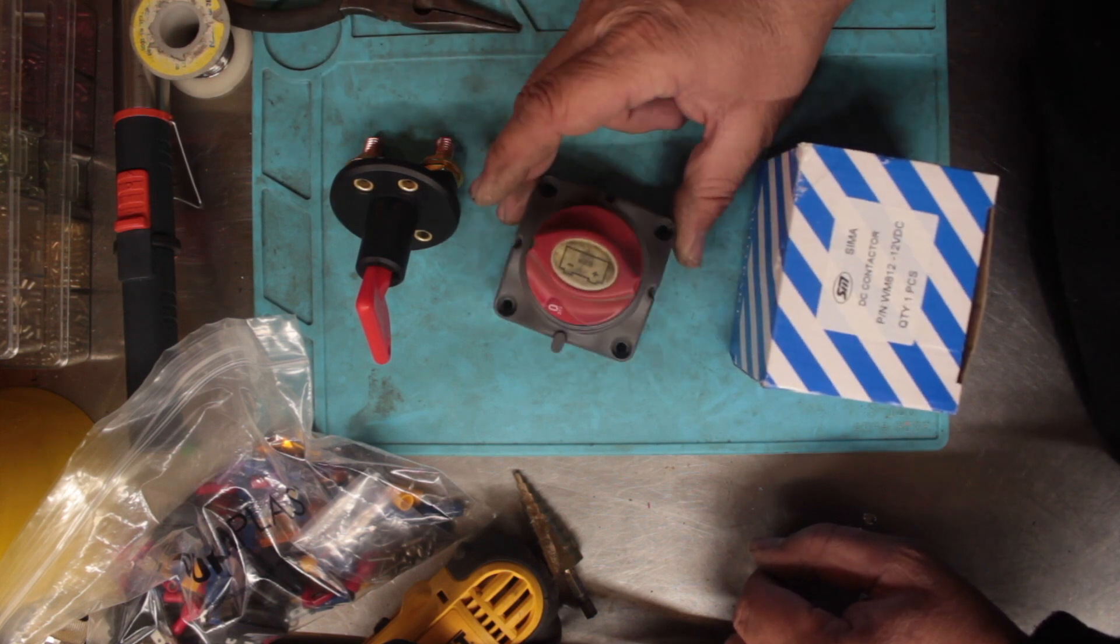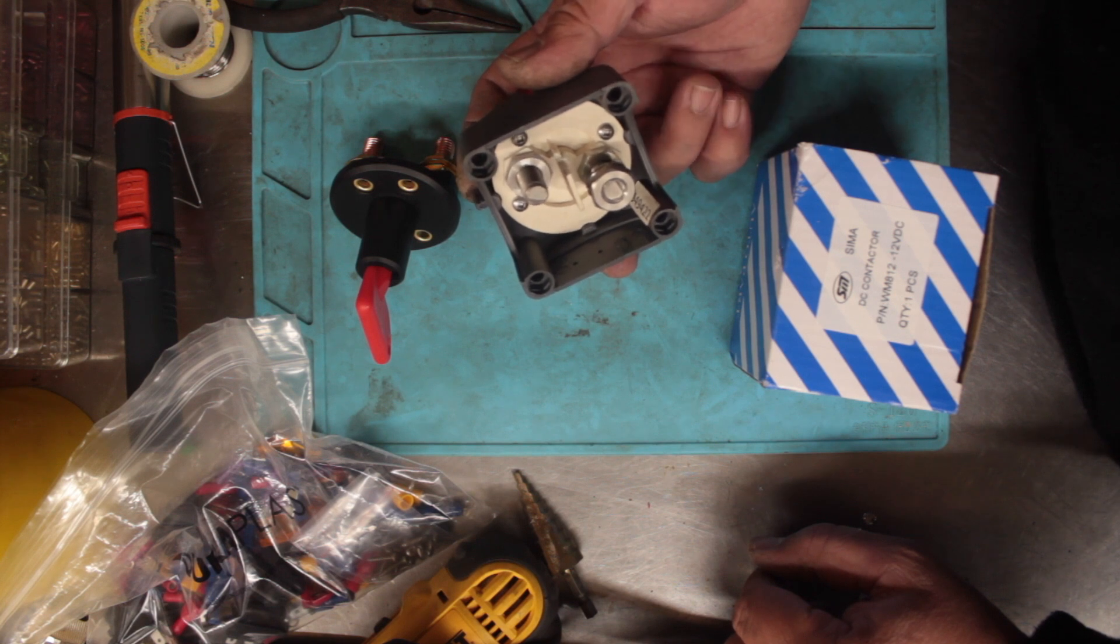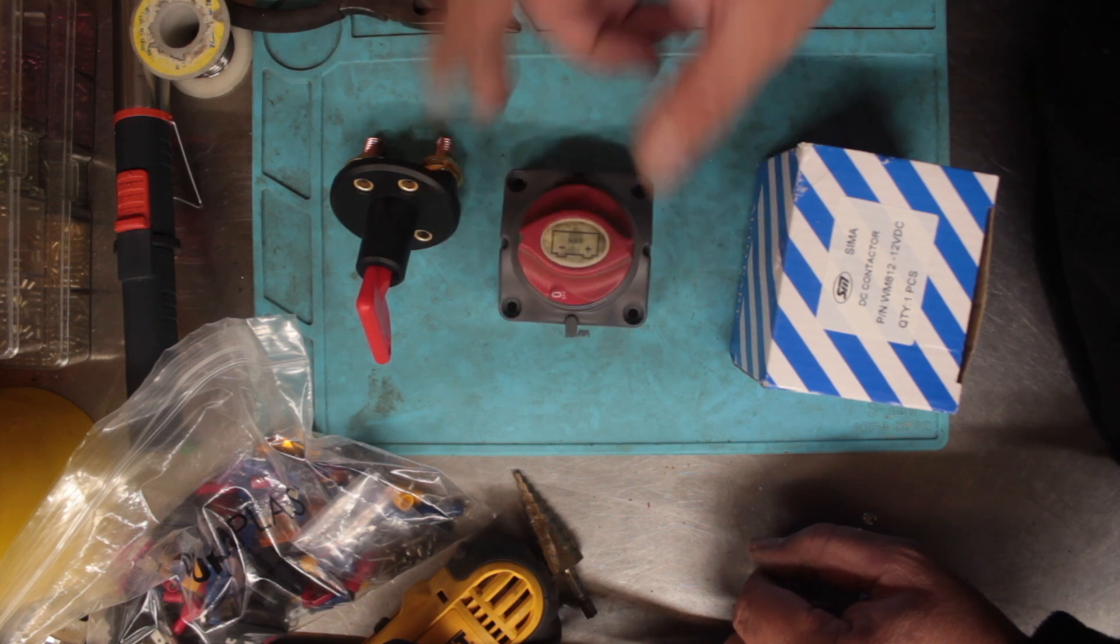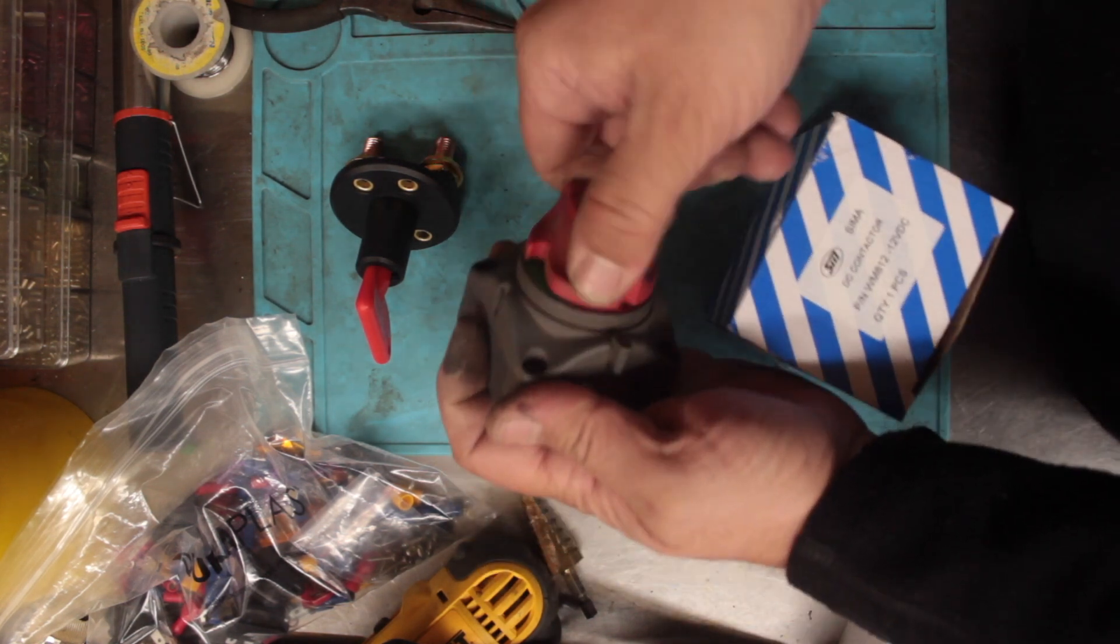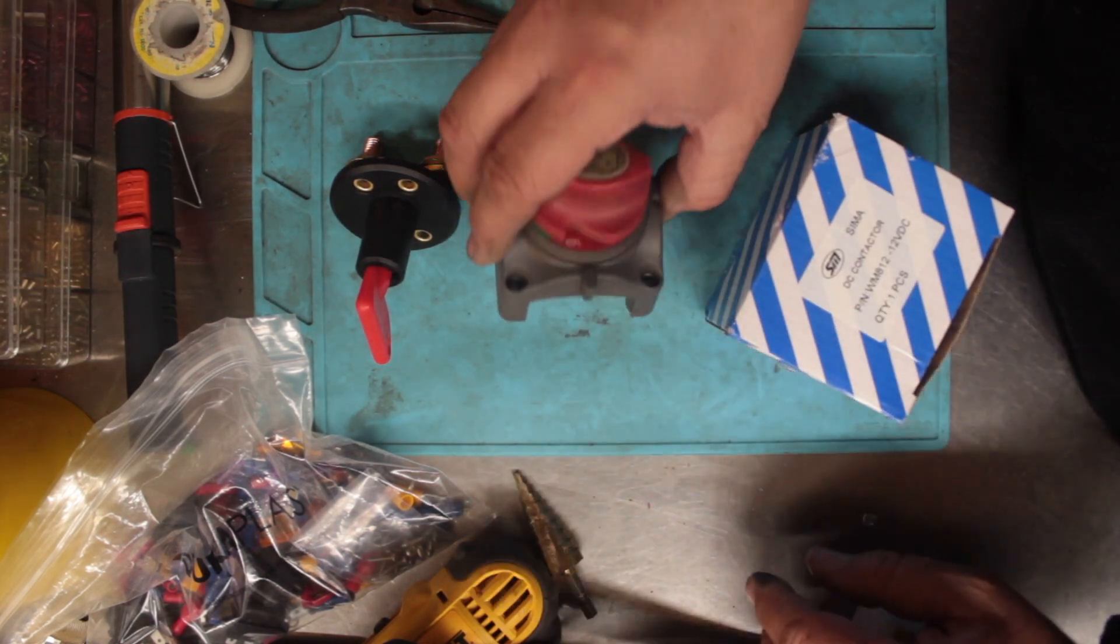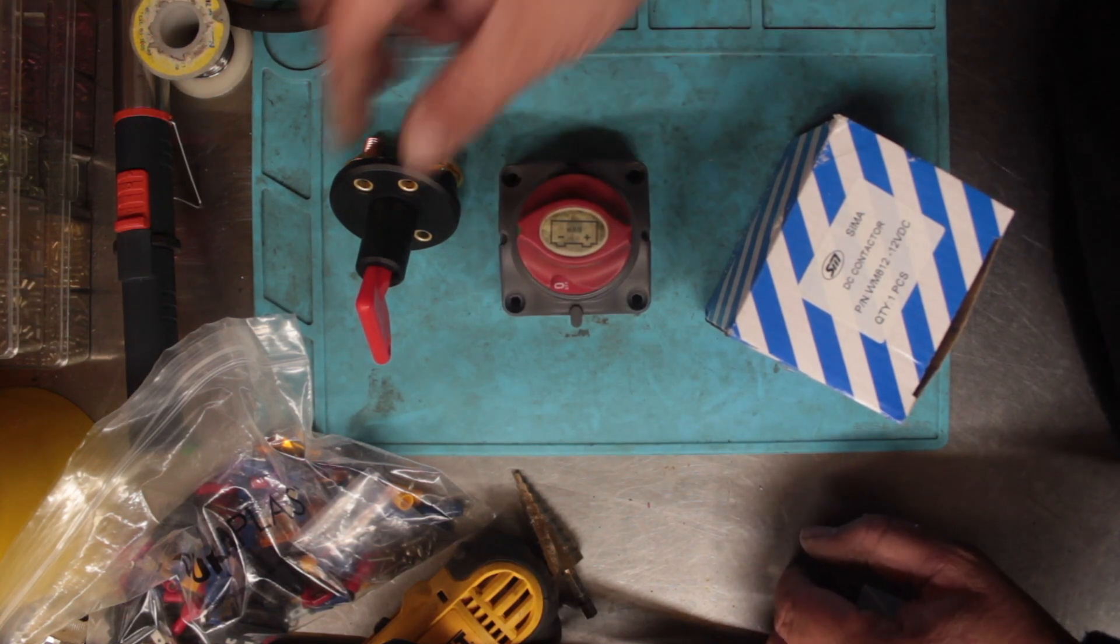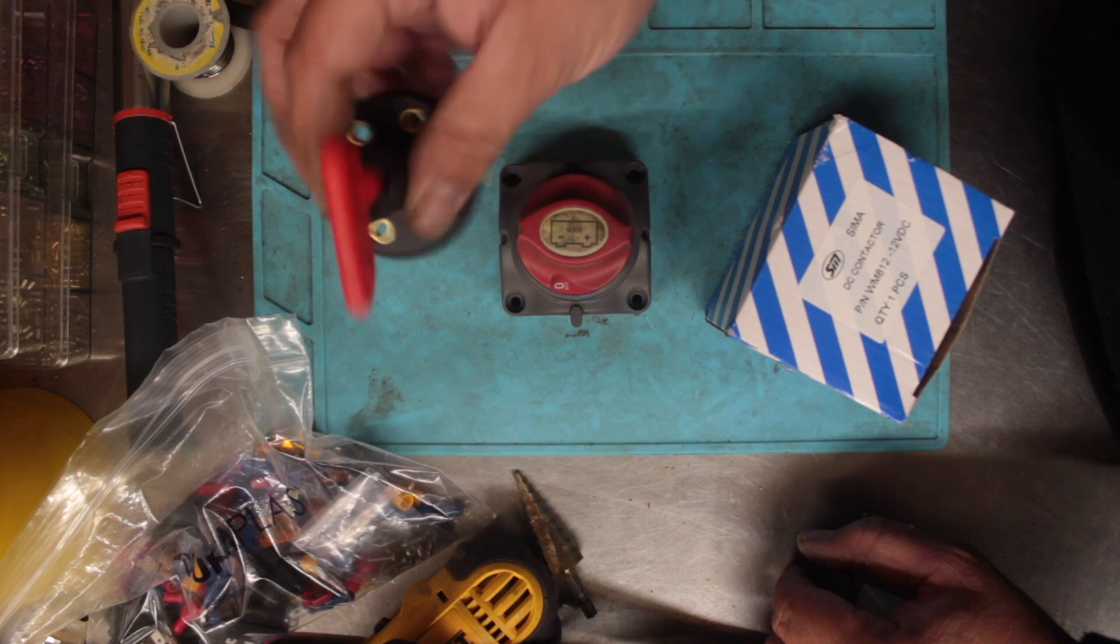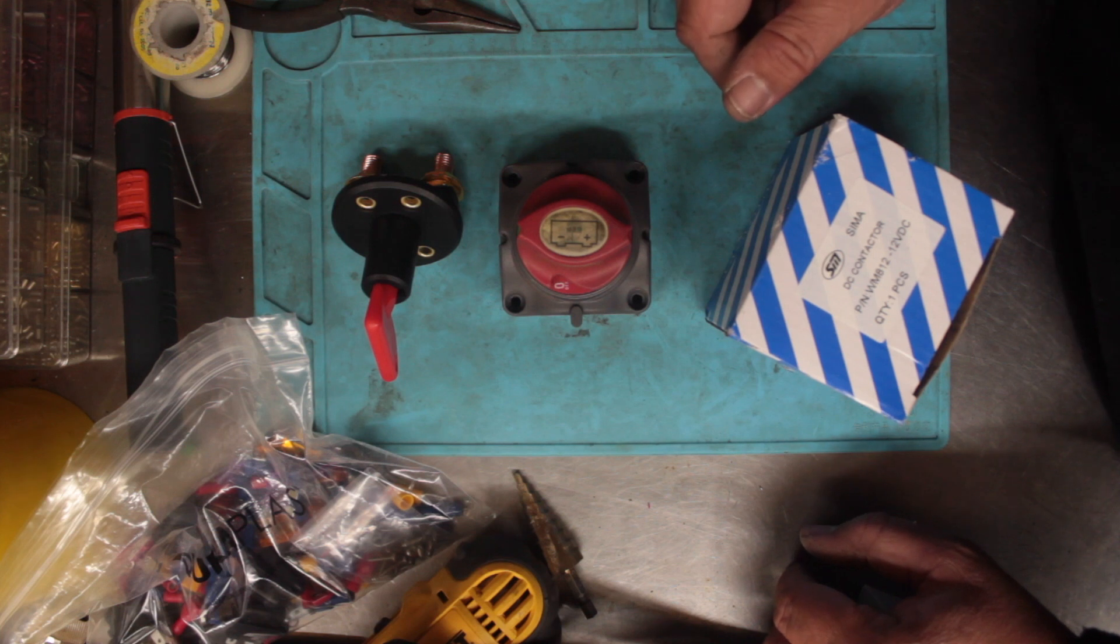This one here I've used quite a lot for turning on 12 volt power and 200 amp power, especially in inverters in the back of cars. You just turn it on, turn it off, big ring terminals on the back, really secure, really cheap too. I think about 25 to 40 bucks a piece. These are very cheap solutions for turning on high amperage power.